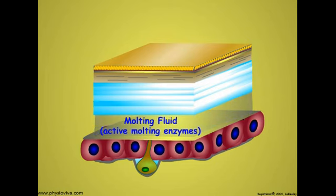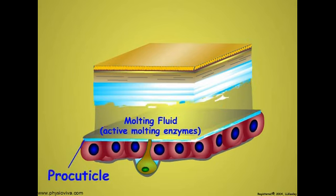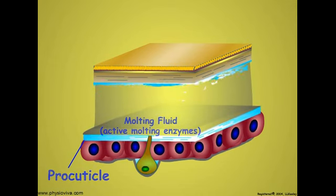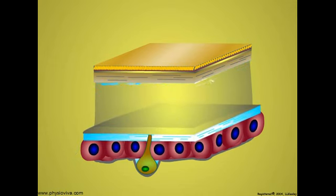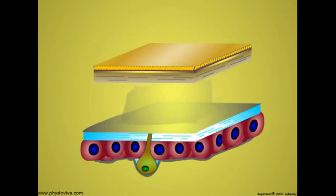The chitinase and protease enzymes of the molting fluid begin to digest the old endocuticle. As much as 90% of the chitin and protein breakdown products from the old endocuticle are reused by the epidermal cells to form a new procuticle. Digestion of the endocuticle continues until it reaches the old exocuticle. The old exocuticle layer is resistant to enzyme action since it is sclerotized. The remaining molting fluid is reabsorbed.